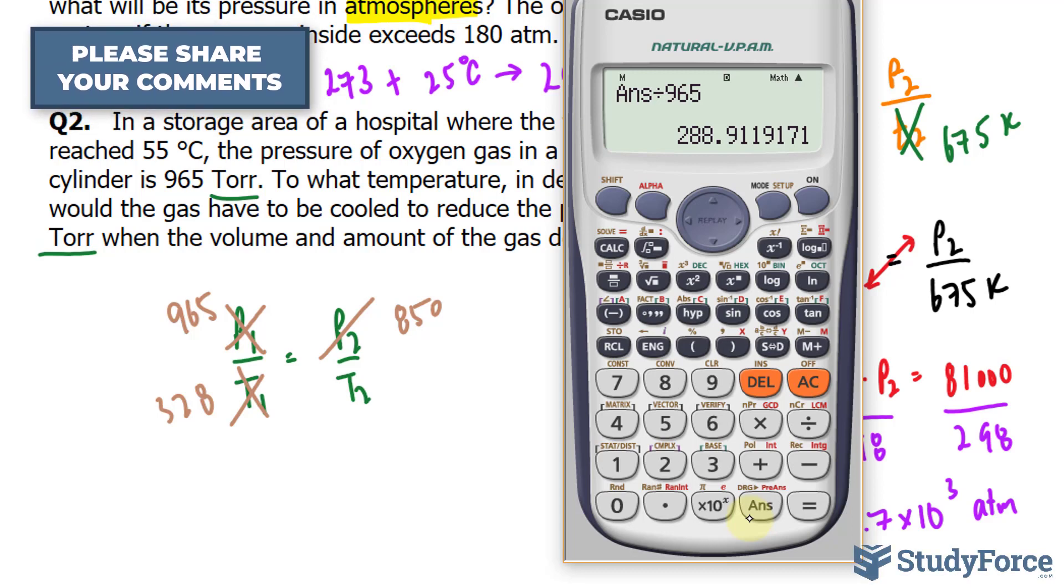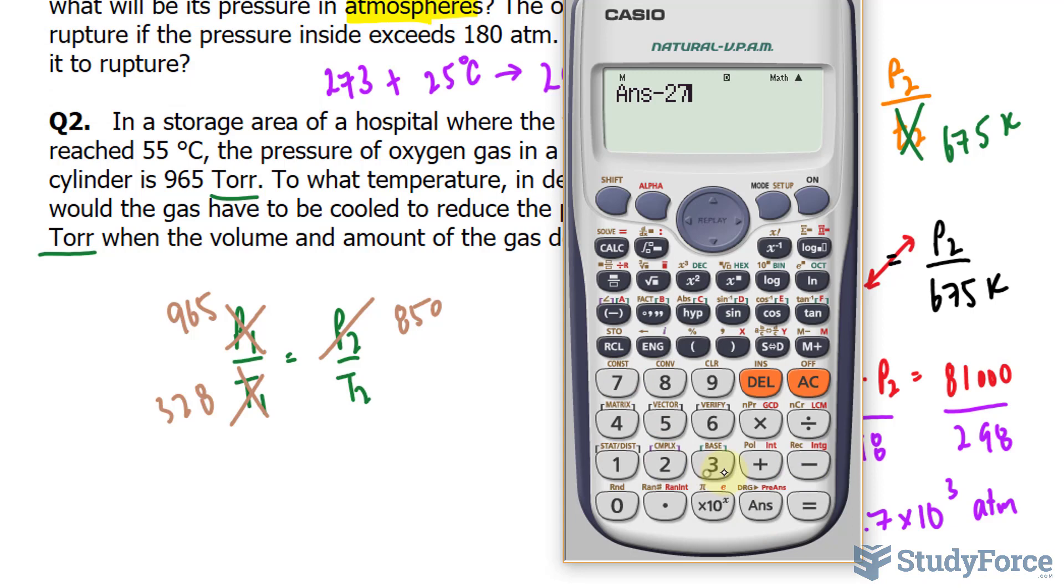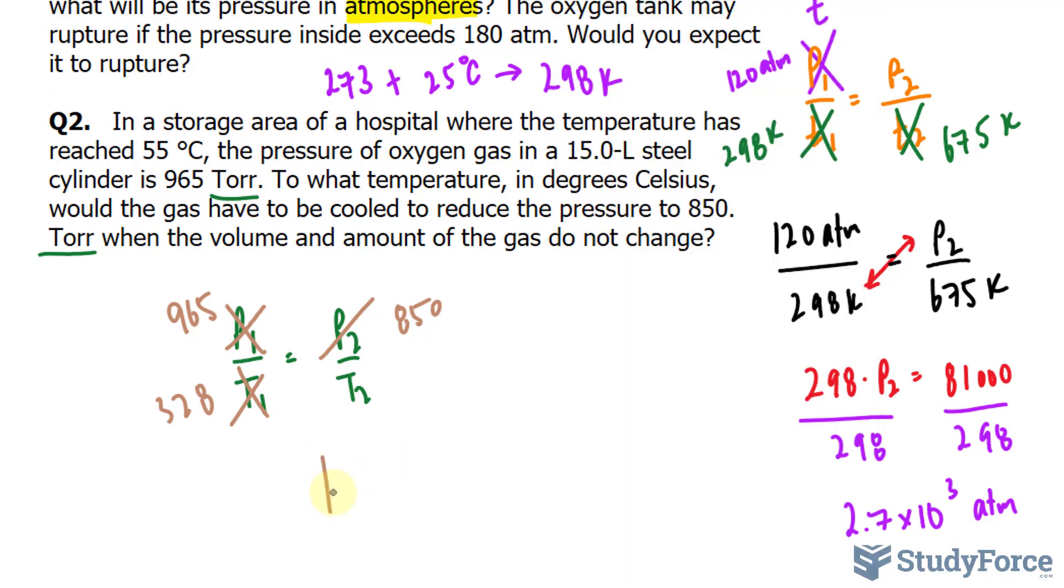This gives us 288.9 in Kelvin. Remember, now we need to convert this back into Celsius. So I'll subtract 273 from that, and make sure that it's to two significant figures. So I'll write down 16°C.